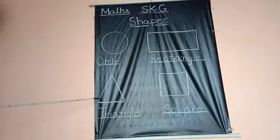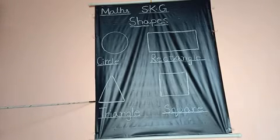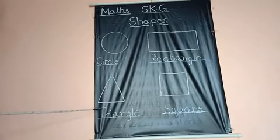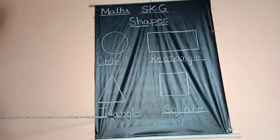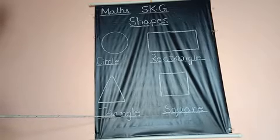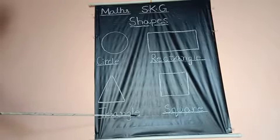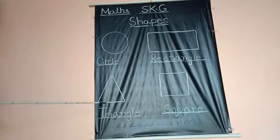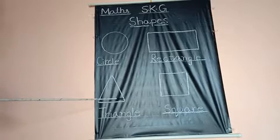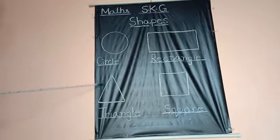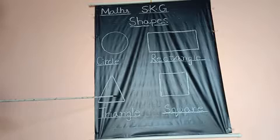Next is triangle. T-R-I-A-N-G-L-E. Triangle. It has three corners. It's like a mountain.